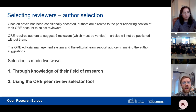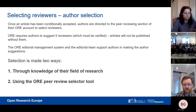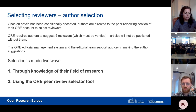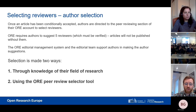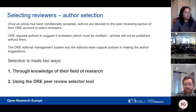We also provide a peer review selector tool accessible through the ORE portal that generates suggested reviewers based on your article title, abstract, and citation details. This tool works best in the life sciences, and names it suggests should always be double-checked for actual qualification. Before an article can be published, we ask the author to suggest at least five reviewers — this reduces the chance of delays, as many may be busy when first approached. Having multiple invites at once gives us the best chance of getting reviewers ready to provide peer review reports.